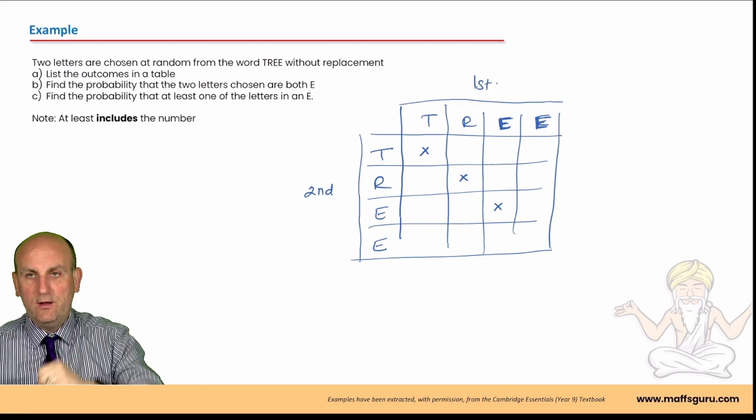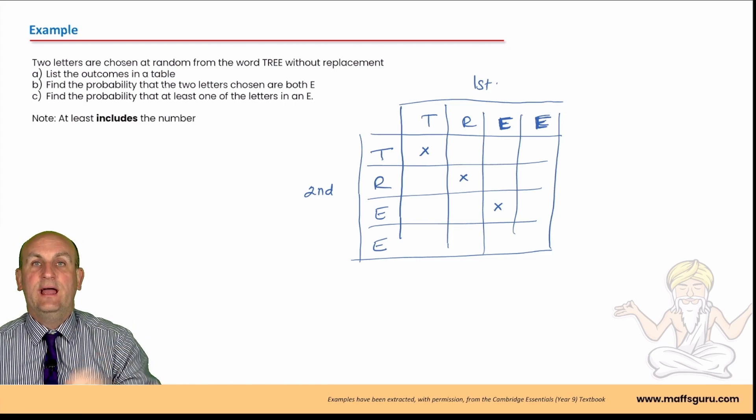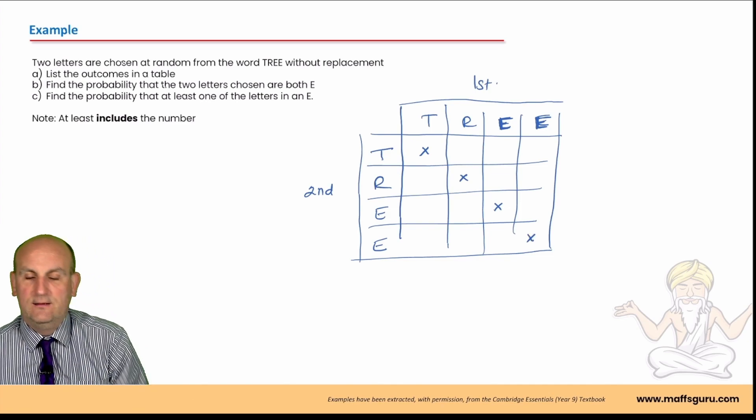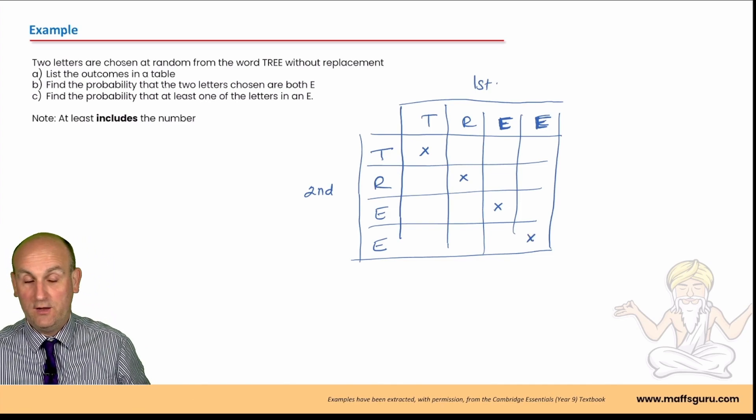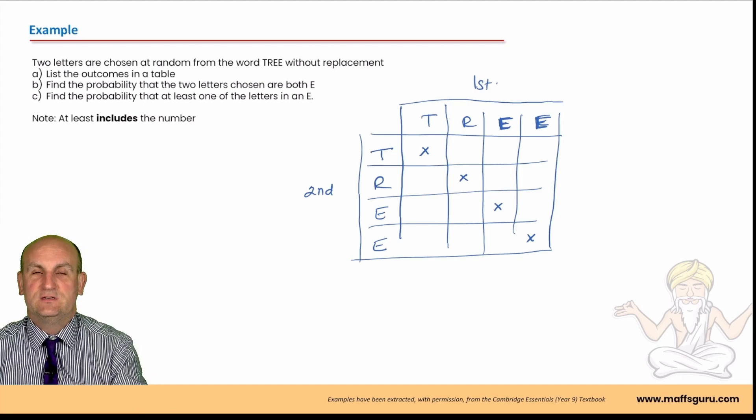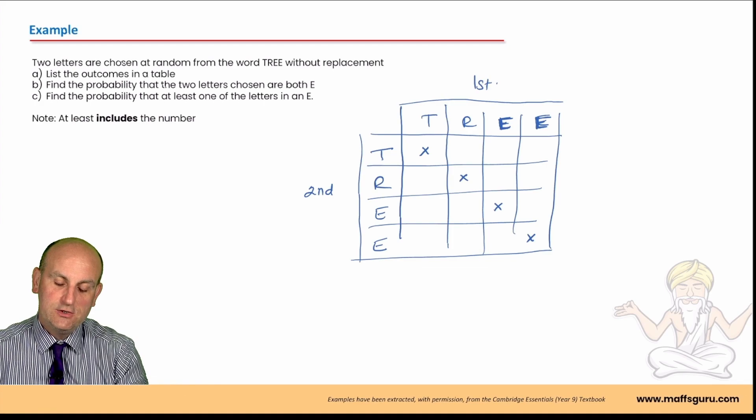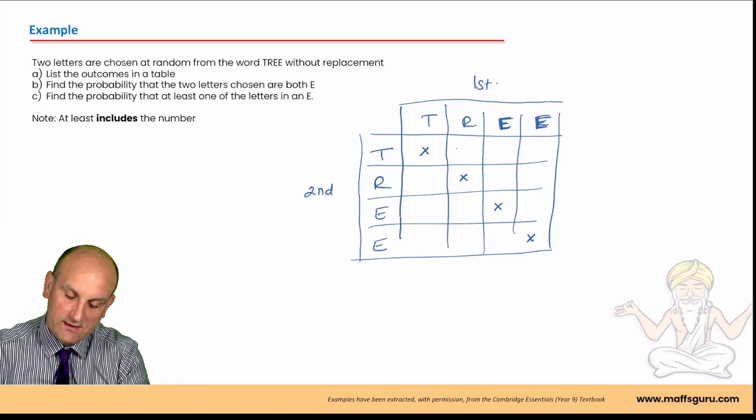Now, the reason being is that E in the third column and the E in the third row are the same E. So, you cannot take that individual E out and replace it. And likewise, that second E and the second E can't be done as well. Now, I know for my maths group, we had a very interesting discussion about that. But, I'm going to leave that to one side.